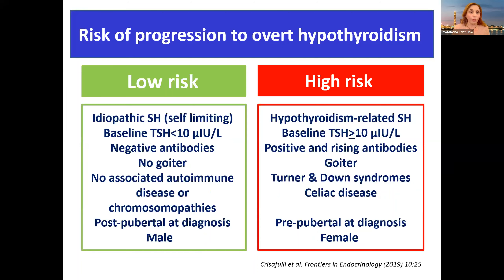Here you can see two boxes — one for the high risk group and one for the low risk group. The low risk group is the idiopathic because it's self-limiting: baseline TSH less than 10, negative antibodies, no goiter, no autoimmune disease, no chromosomal aberration, post-pubertal, and male. The high risk group includes thyroid pathology, TSH of 10 or more, positive and rising antibodies, goiter, any syndromes like Turner and Down, celiac disease or associated autoimmunity, prepubertal, and female.